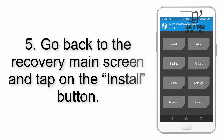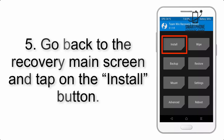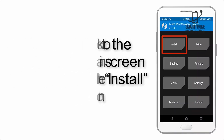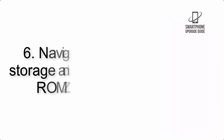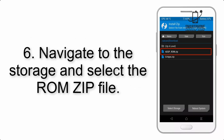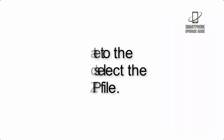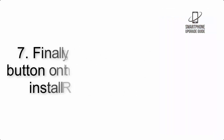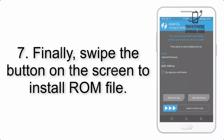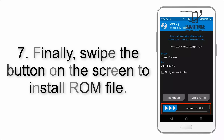Step 4: Swipe the button to wipe the device. Step 5: Go back to the recovery main screen and tap on the Install button. Step 6: Navigate to the storage and select the ROM zip file.